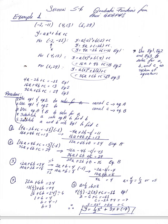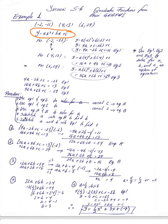This is a review for section 5.6. In this section you're given three specific points and asked to find the equation. We start by remembering the general equation: y equals ax squared plus bx plus c.